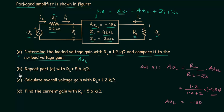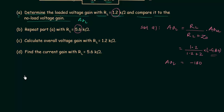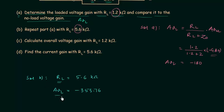In part B we repeat part A with load resistance equal to 5.6kΩ instead of 1.2kΩ. With RL equal to 5.6kΩ, AVL in this case is equal to minus 353.76, which is good. We can see that with an increase in load resistance, the loaded voltage gain AVL also increases. This is one important result: with increase in load resistance, the loaded voltage gain also increases.